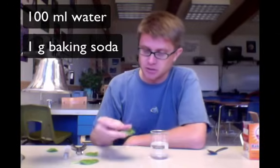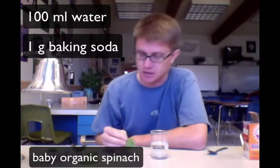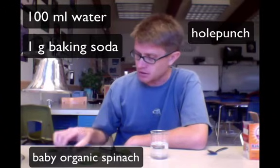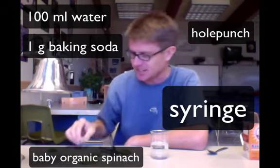Next we need a leaf, and so I use these baby spinach. It's organic spinach that I just buy at a nearby grocery store. You'll also need a hole punch and then you'll need a syringe. Take the needle out or it's not going to work real well.